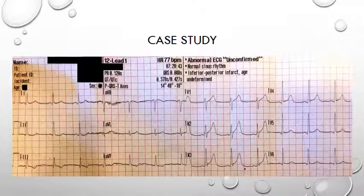Going back to the ST depression and T wave inversion in the inferior leads: since ischaemia doesn't localise, this finding is most likely reciprocal ST depression to the anterior leads. We can also see some ST elevation in V2 to V4, which wasn't covered earlier and is now being highlighted.